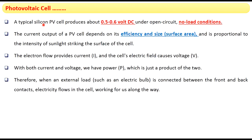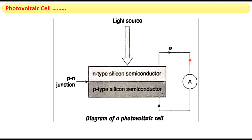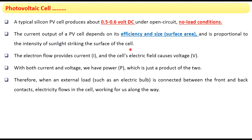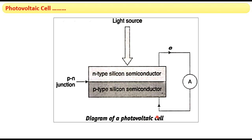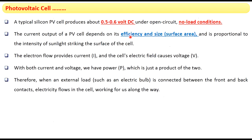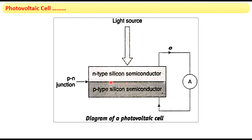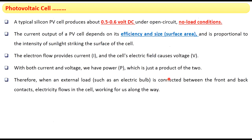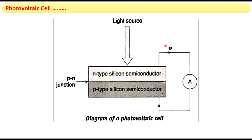A typical photovoltaic cell made up of silicon will provide 0.5 to 0.6 volts of direct current, especially under open circuit, no-load conditions. The current output of a photovoltaic cell depends on three factors: the efficiency of the photovoltaic cell, the surface area of the photovoltaic cell, and the intensity of the sunlight striking the photovoltaic cell.